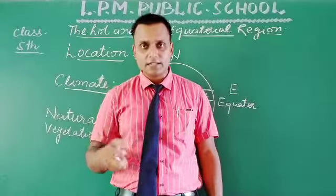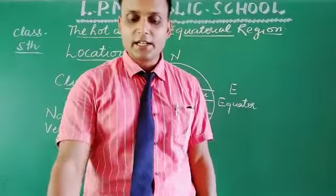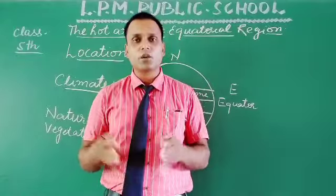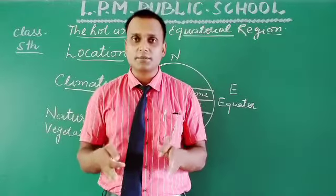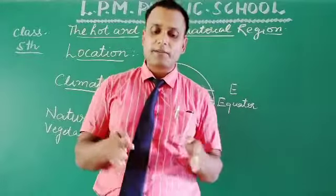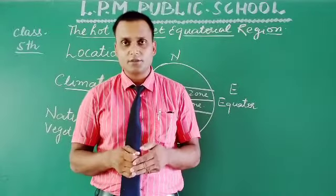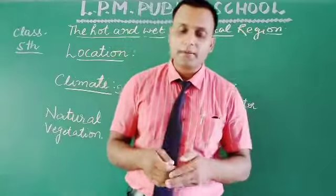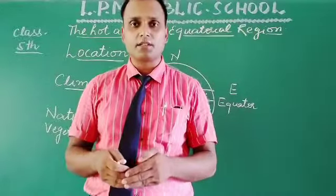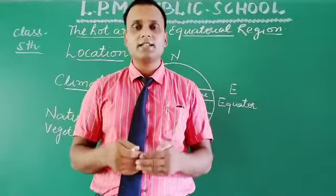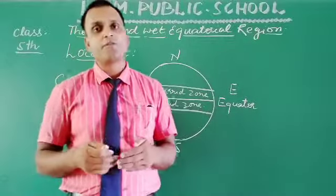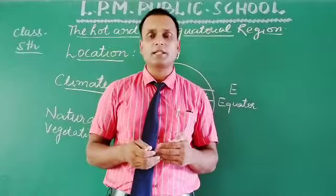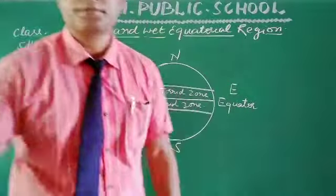What type of plants and trees are found in this region — that is known as the natural vegetation of that particular place. This is a wide topic which we are going to read in detail in our next video. Till then, you are supposed to revise each and every point discussed in this video regarding the location and climate of the hot and wet equatorial region. You should also maintain your fair copies as well as classwork copies, and I will provide exercise and written notes in the form of videos so you can cover each and every topic and lesson.